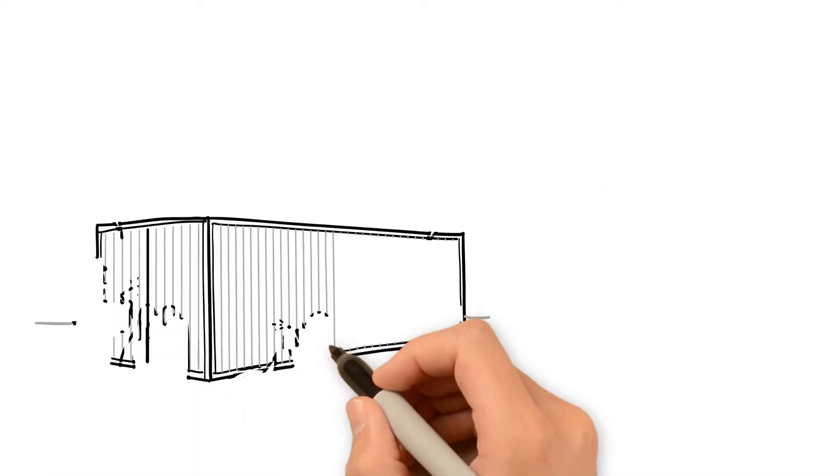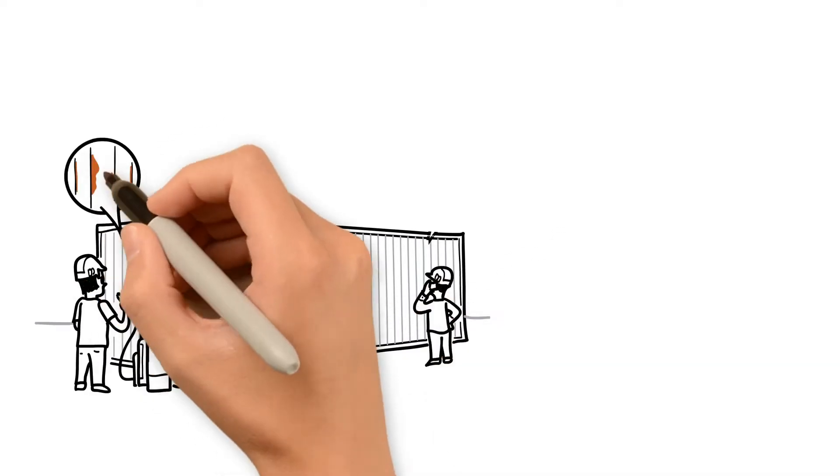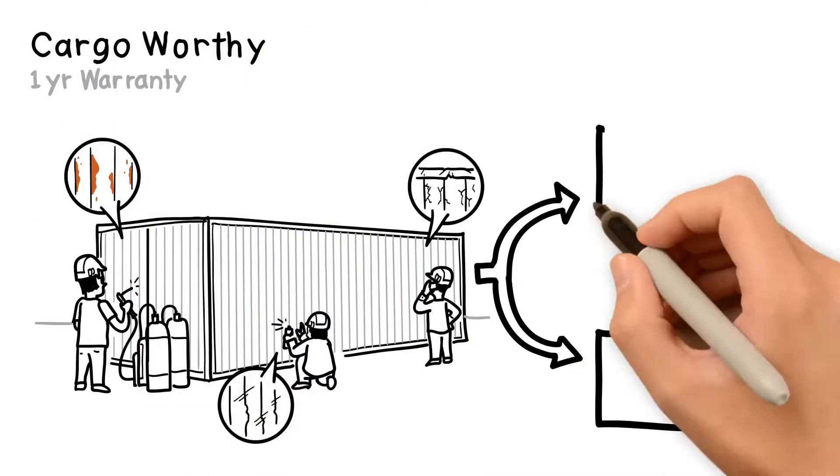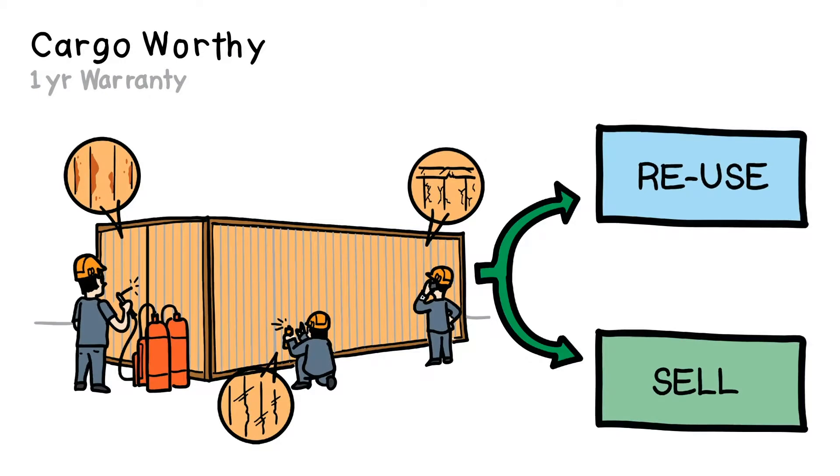If the estimate is approved, they fix it. After repair, this container is cargo-worthy again. It can be sold or reused for cargo. The container cosmetically will look pretty good and is usually 7 to 14 years old. You can expect minor rust with small dents and dings.